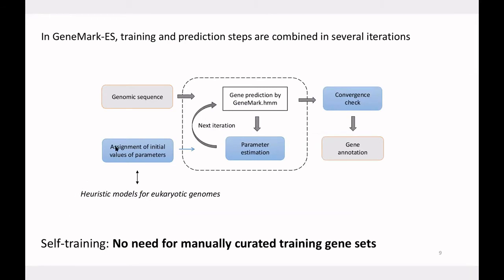GeneMark-ES approaches this problem differently using self-training, similar to the prokaryotic GeneMark. It predicts genes in iterations: starting with very rough gene parameters, it predicts an initial gene set, then re-estimates parameters from that set, predicts a slightly better gene set, re-estimates again, and iterates until convergence. In the end we get a gene annotation with no manually curated gene set anywhere in the process — the algorithm works from sequence alone.